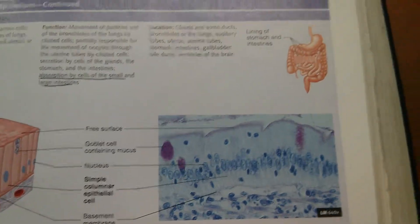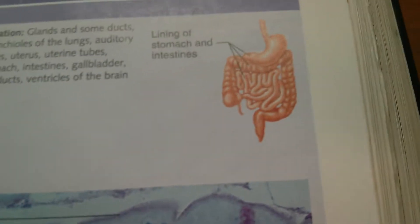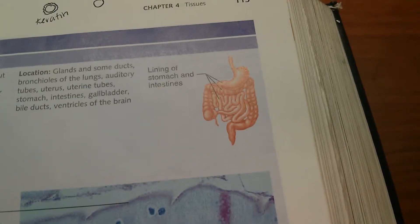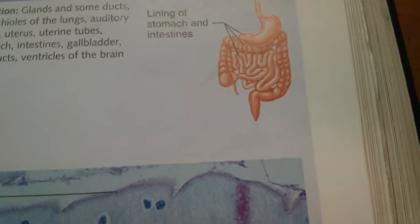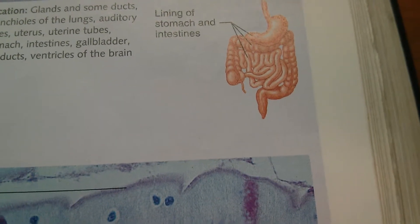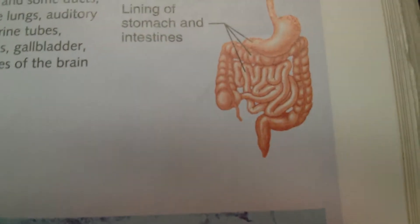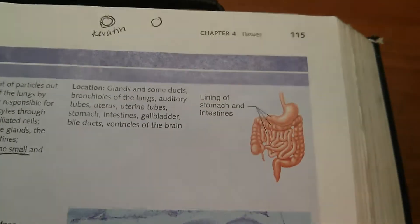One place in the body that is very important for absorbing is the intestines. When you eat your food and digest it in the stomach, all the vitamins, fats, and proteins go into the intestines, where they have to be broken down so they can absorb into the bloodstream. This is where you'll find columnar cells, where absorption is very important. Without those in your intestines, you wouldn't be able to absorb any of the nutrients you're eating.